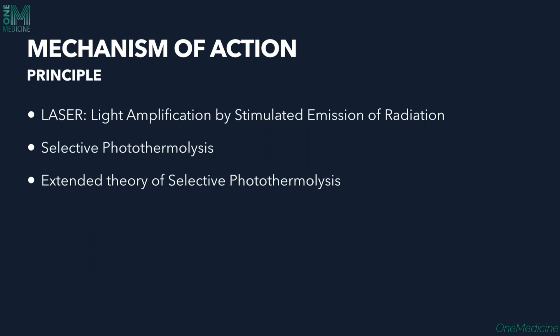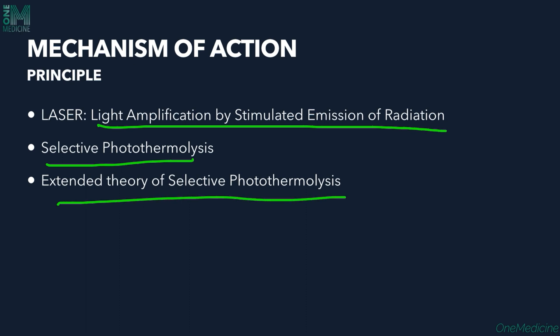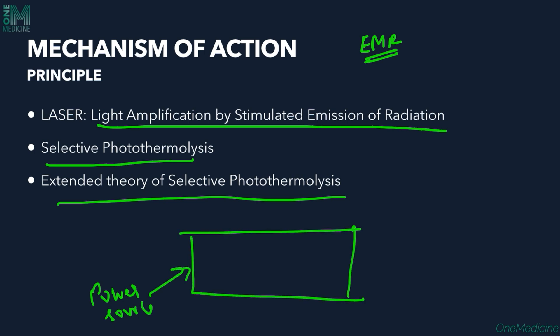The mechanism of action principle: the principle of laser removal is light amplification by stimulated emission of radiation. Another principle is selective photothermalysis, and the extended theory of selective photothermalysis is what laser hair removal basically works on. The laser device has a power source which goes inside the lasing medium, and out comes the laser output — the light that we see.